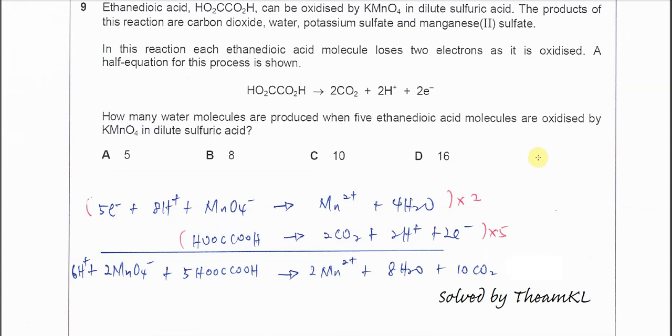This question is the oxidation of ethanedioic acid with the permanganate. The half equation is given, so this acid after it gets oxidized will form CO2 and release two electrons.